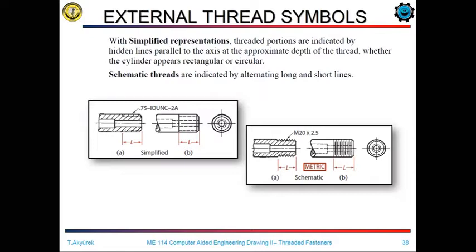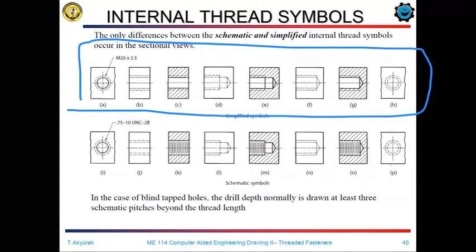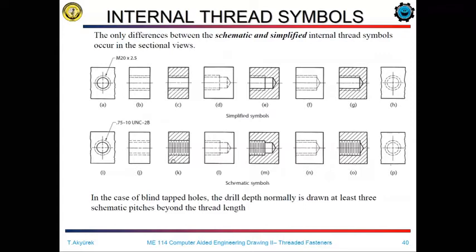We have many different standards of fasteners. In our focus, we will investigate mostly metric fasteners. In the metric type fasteners, we have the letter M in its definition. In this slide, you can also see some schematic representation of thread symbols. On the top of the presentation, we have the metric type representation of the metric standards — for example, metric M20 with a pitch dimension of 2.5 mm.